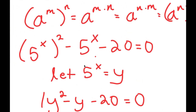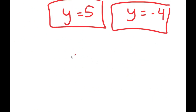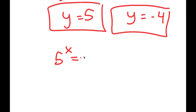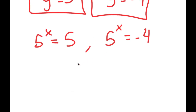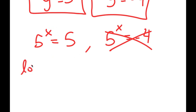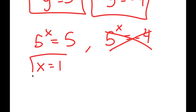Now remember we let 5 to the power of x equal to y, so this means we get two equations: 5 to the power of x equals 5, and 5 to the power of x equals negative 4. We can't raise a positive number to any power and get a negative number, so the equation 5 to the power of x equals negative 4 has no solution. For 5 to the power of x equals 5, we can see that 5 to the power of 1 equals 5, so x equals 1 is the solution.